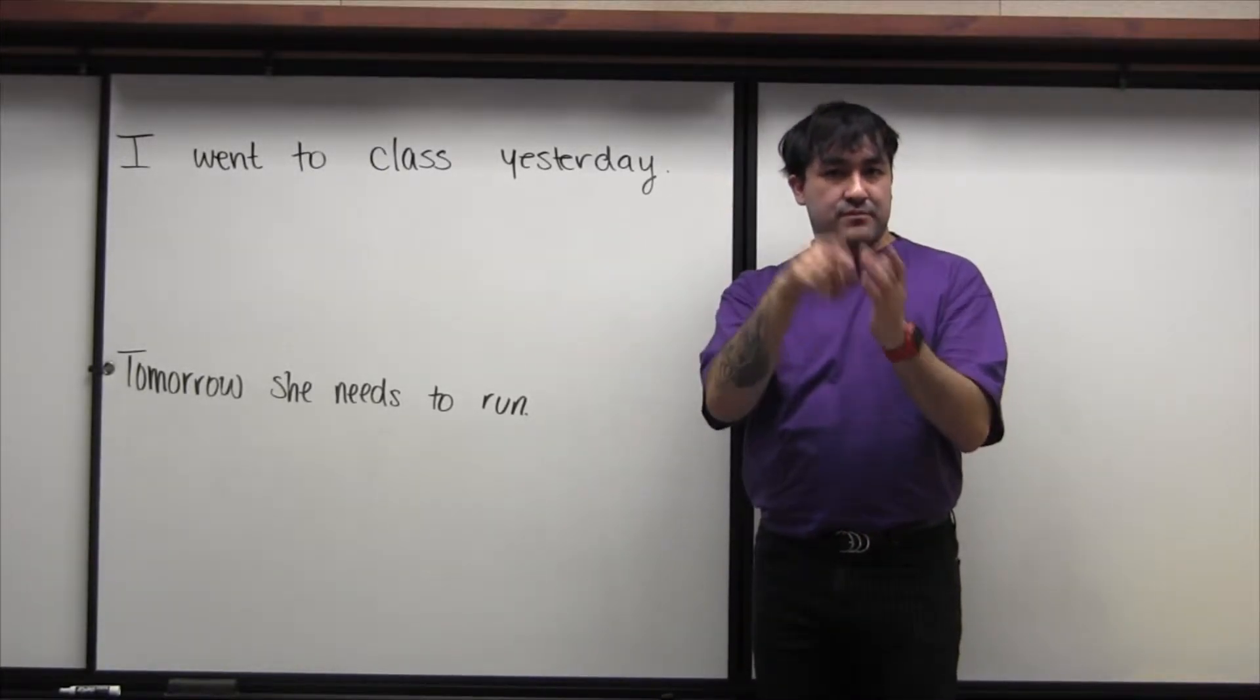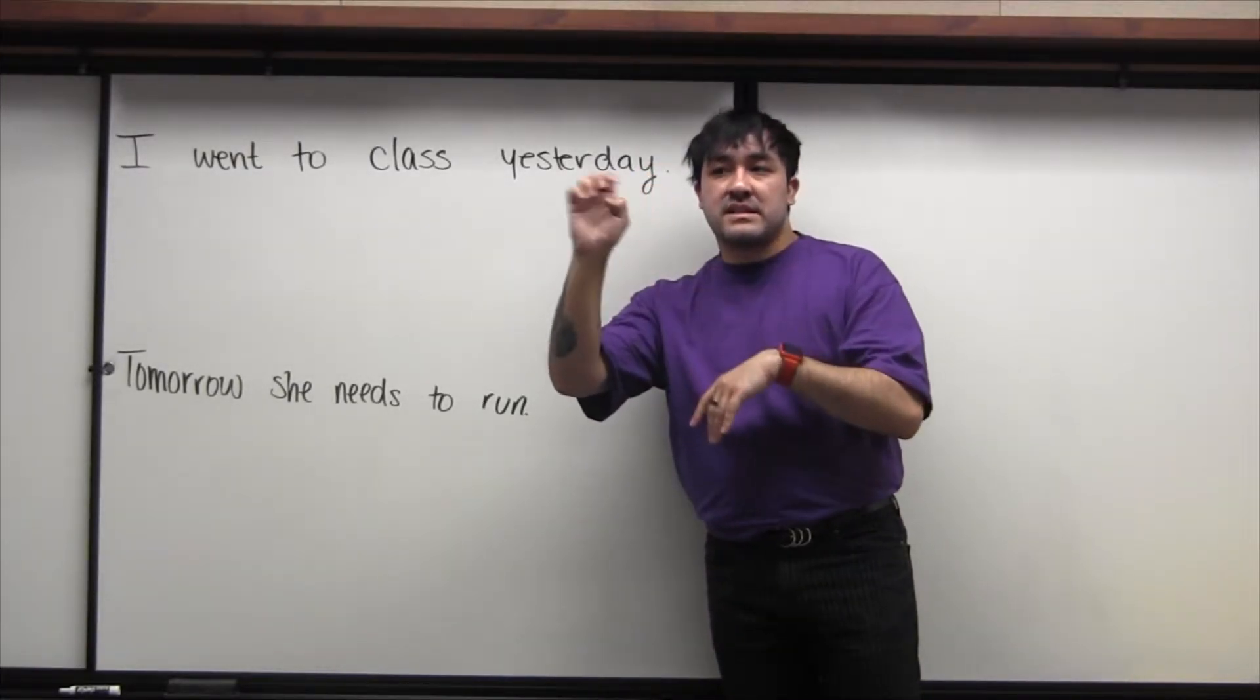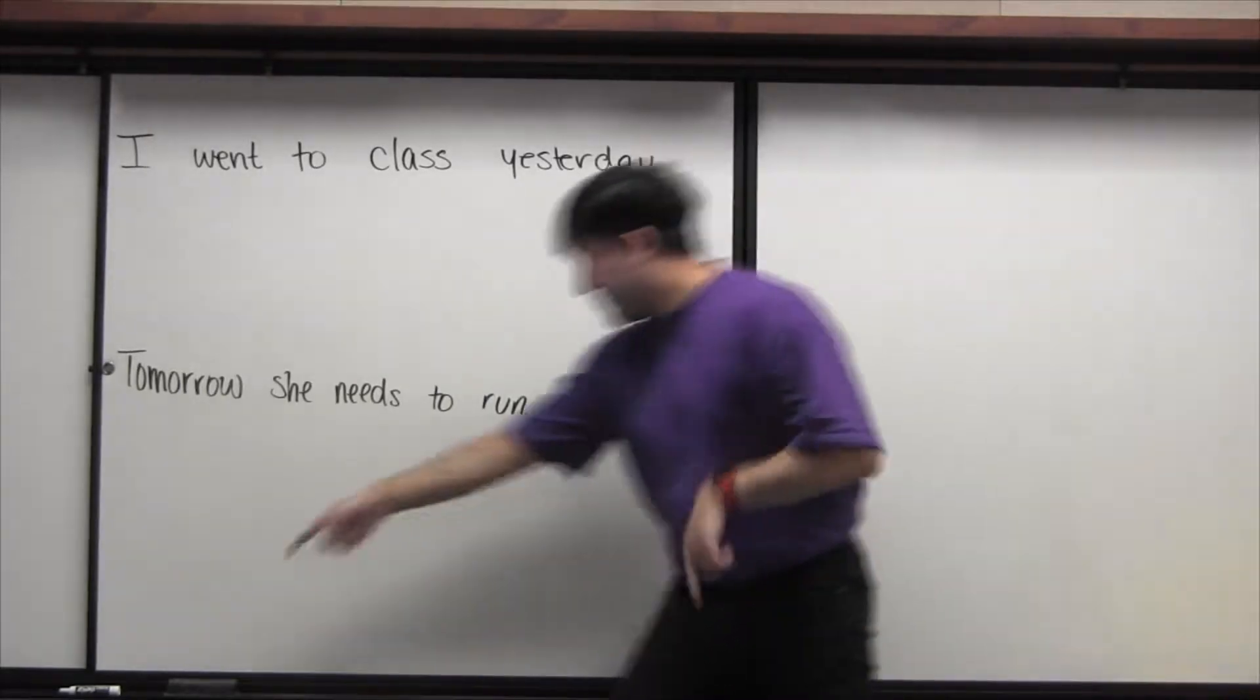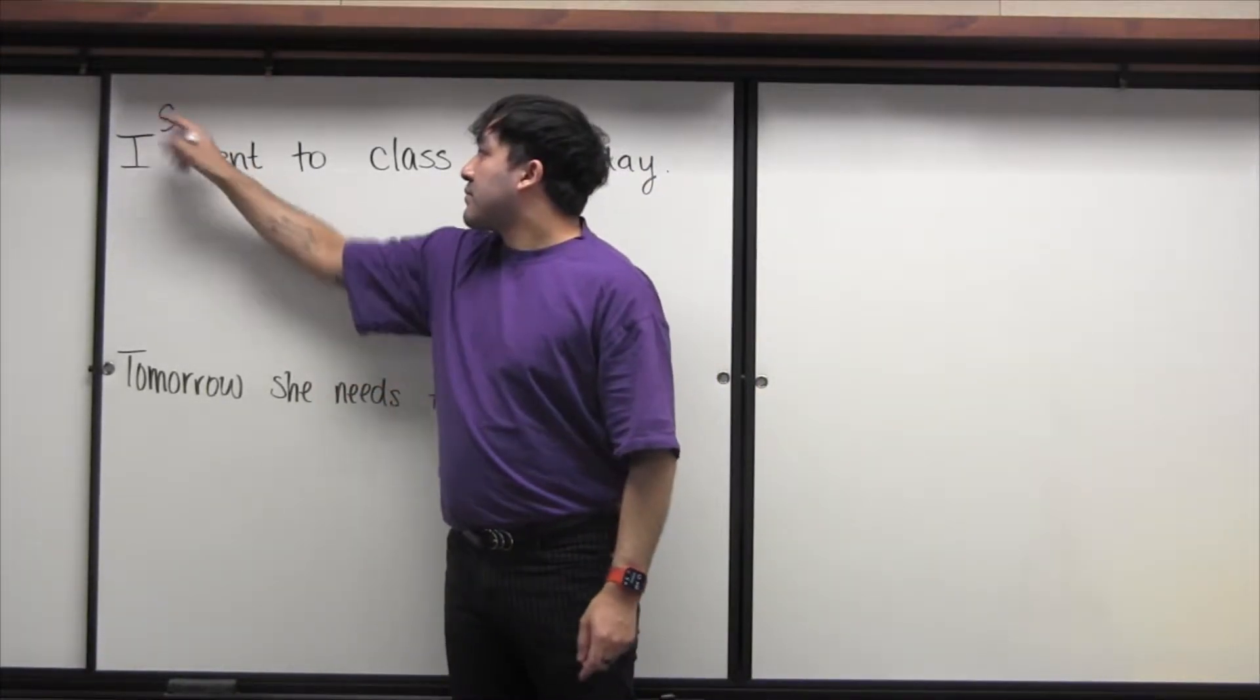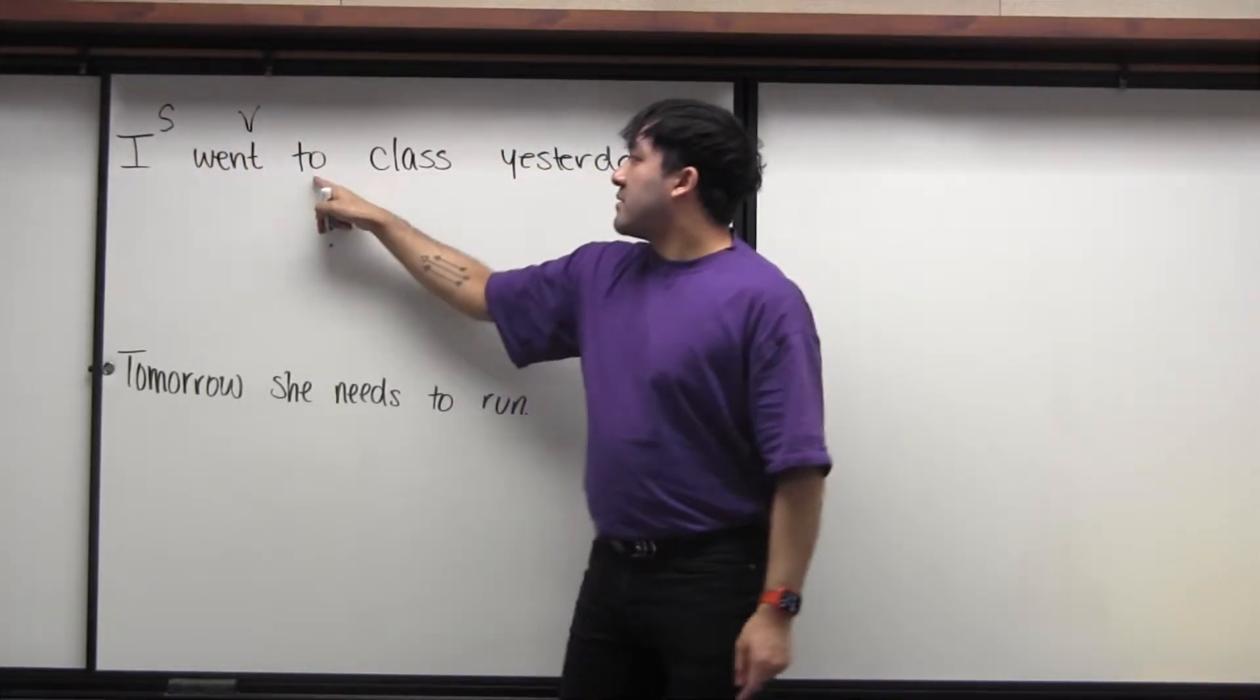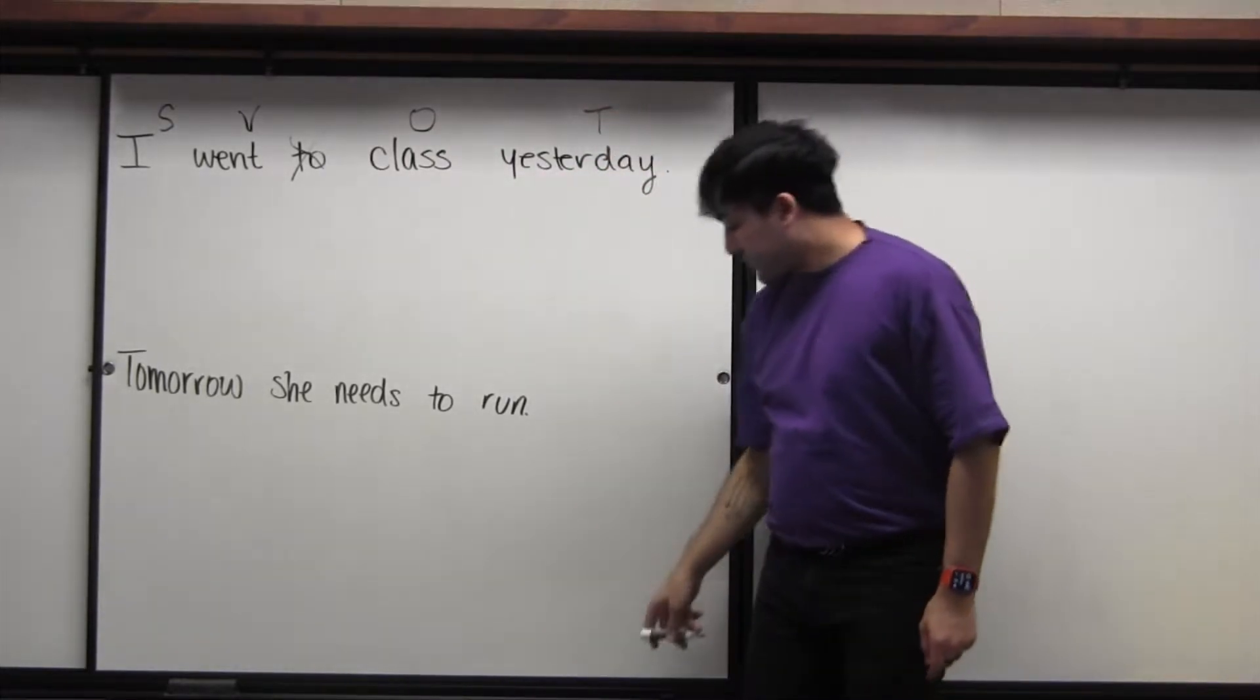So first, what we always do is identify the object, the subject, the verb, and now we're going to also add the time. But don't forget there's also negatives, there's modal verbs, wh, but that's not right here. So we have our subject, we have a verb, class is our object, and yesterday is our time.